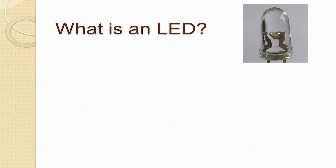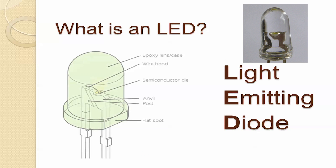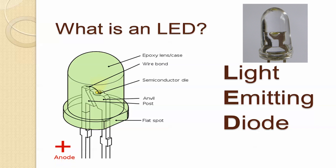So what is an LED? LED stands for light emitting diode. As you can see, an LED has an anode and a cathode, which are the positive and negative connections. You also have an epoxy lens that protects the LED and projects the light.